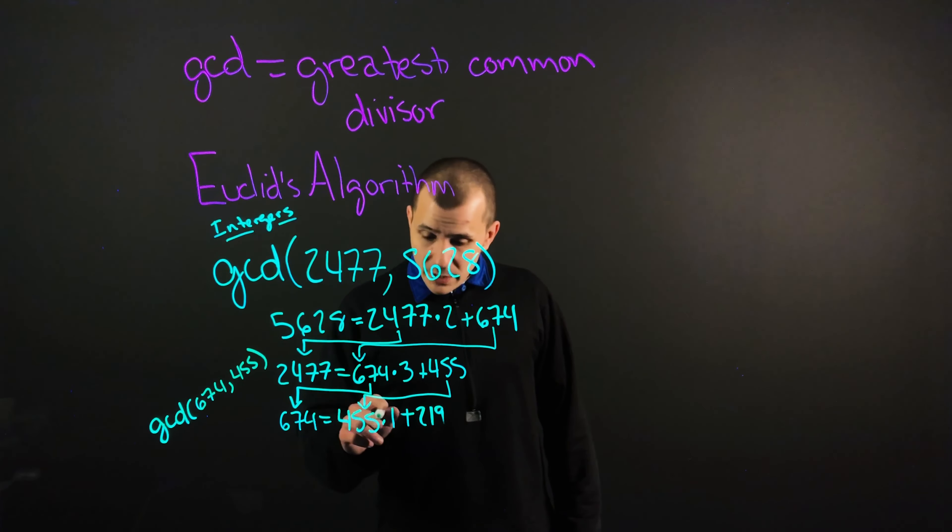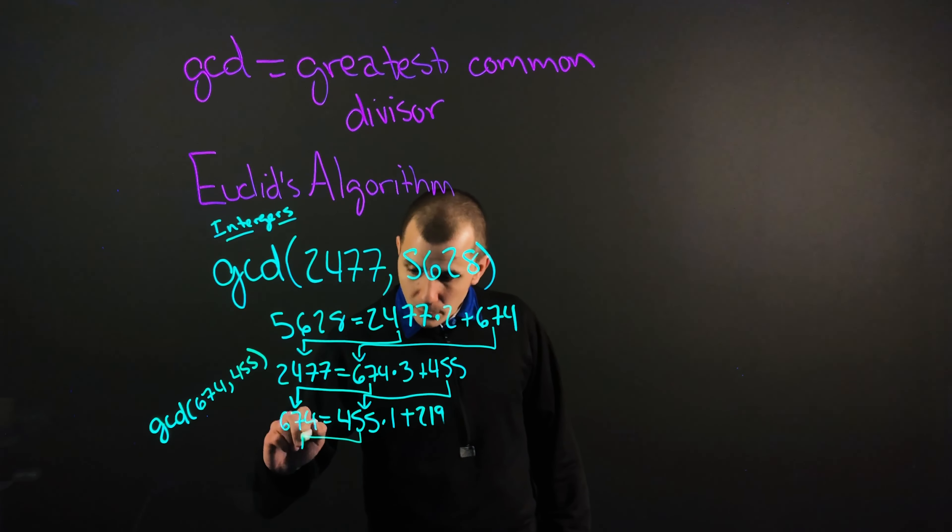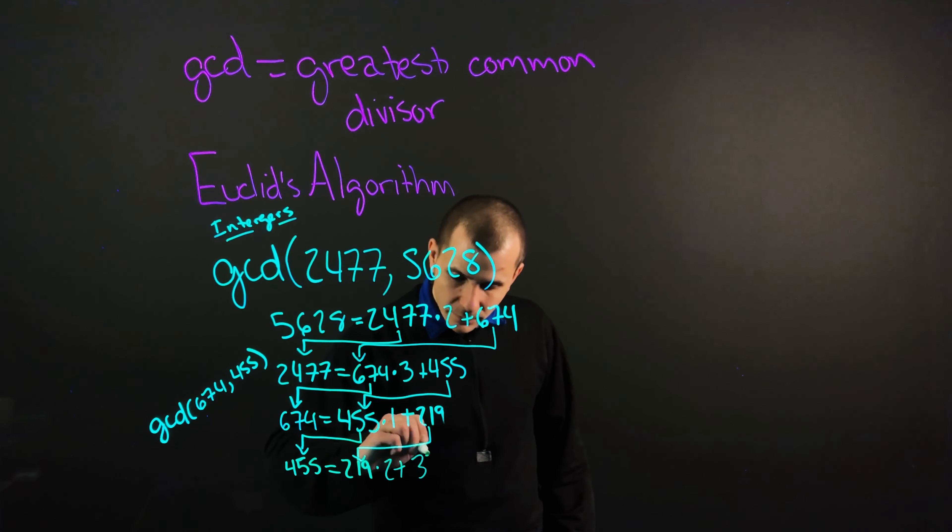So from here, what we need to do is, again, move our integers around. We have our 455 equals 219 times by 2 plus the remainder of 37.